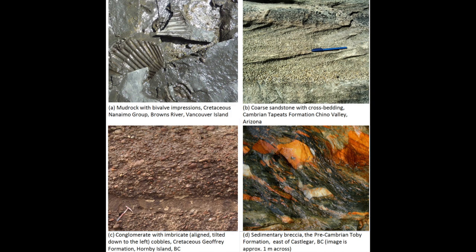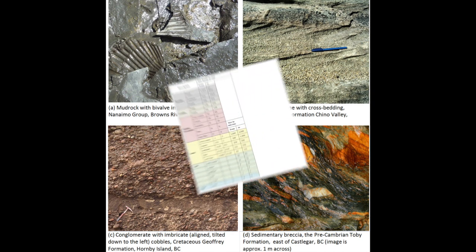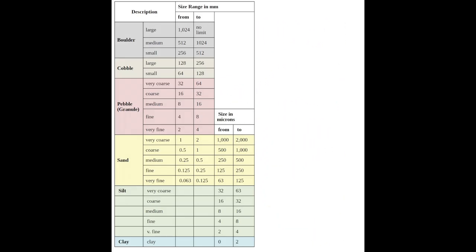Clasts can be classified by size using this chart. Boulders are classified as anything larger than 25 centimeters, or about 10 inches. Cobbles range from 6 to 24 centimeters. Pebbles are 2 to 60 millimeters. Sands and smaller clast sizes are more easily measured in microns.